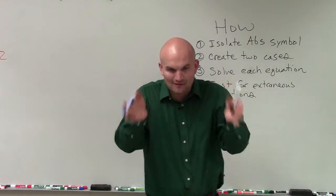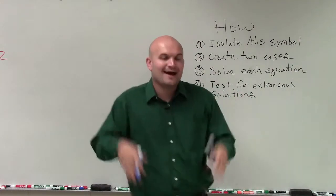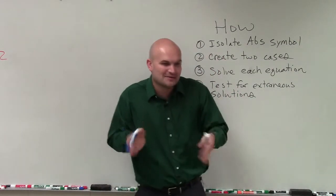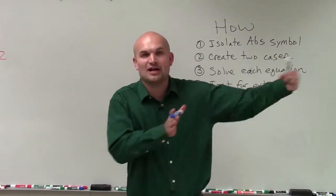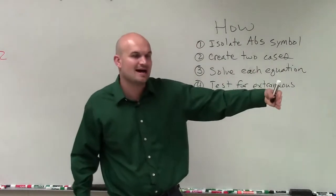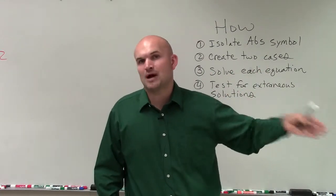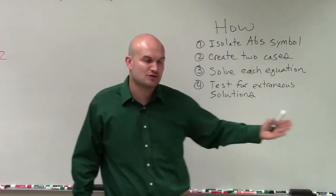And then whatever was inside the absolute value equals the negation of what was on the other side. And make sure that when you're negating the opposite side, if you have an expression such as 3x minus 2, that you have to apply distributive property. You have to negate each and every one of those terms.